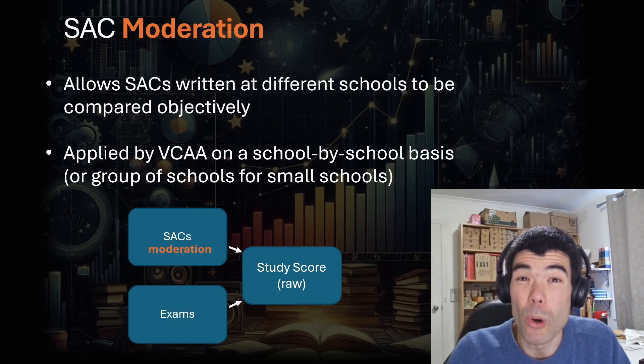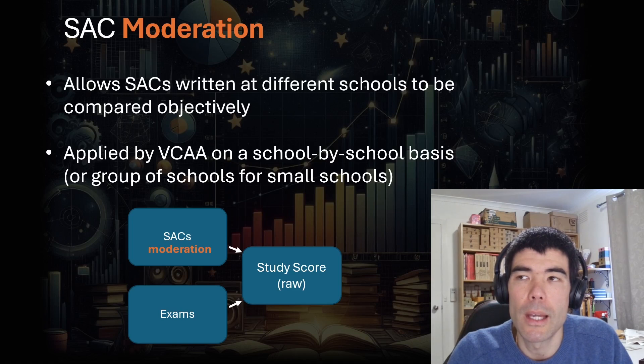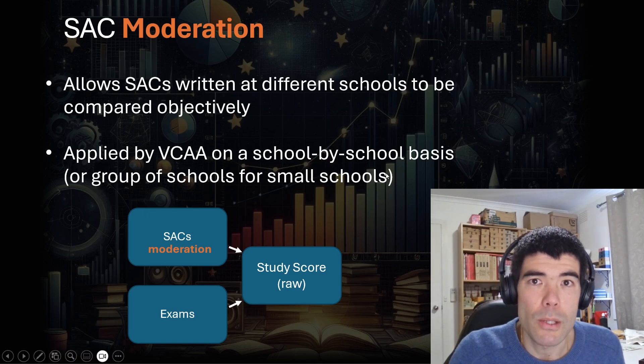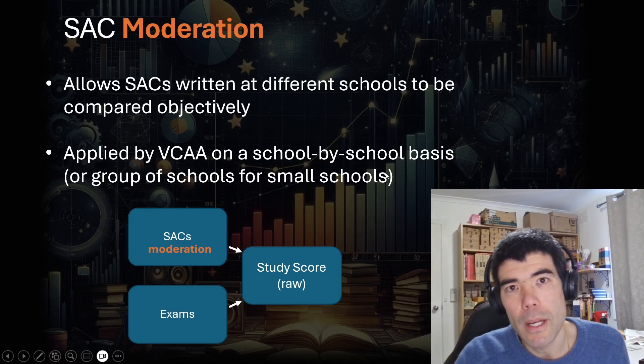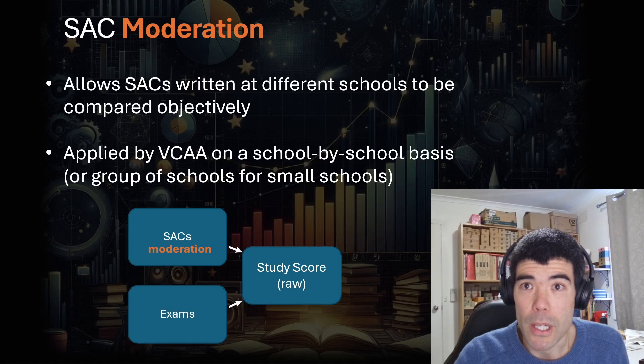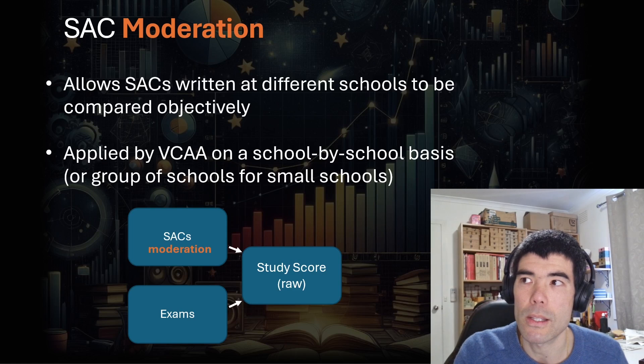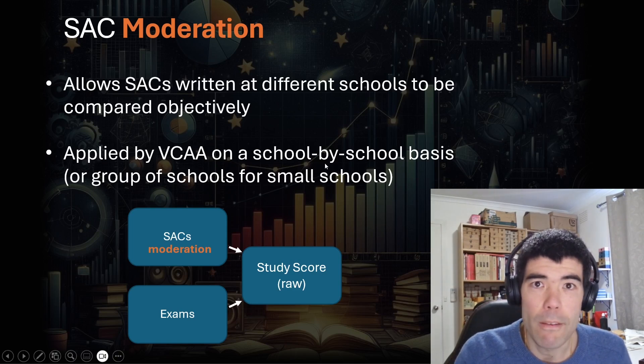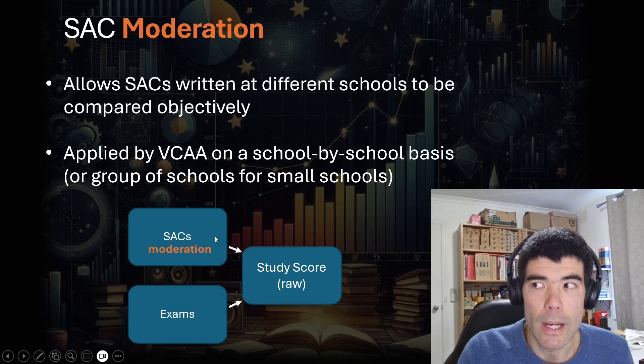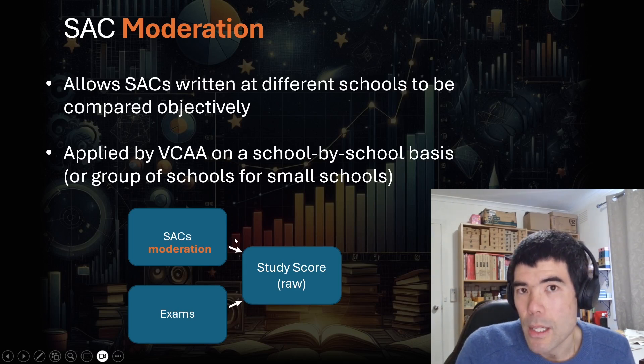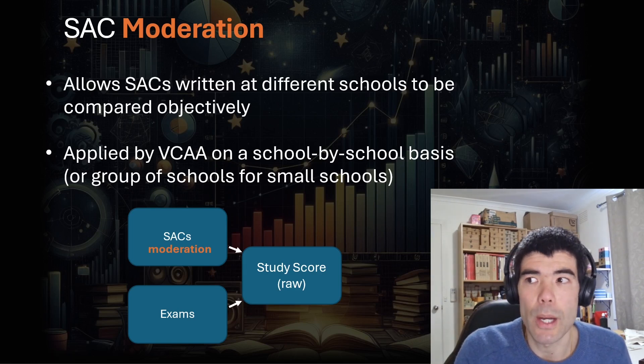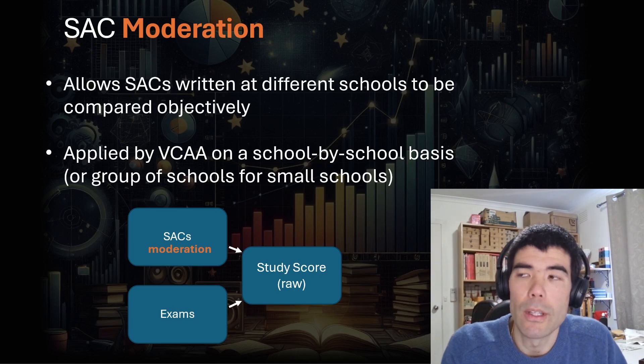SAC moderation is probably more complex than study score scaling because it has to happen on a school by school basis. And compared to like when we look at scaling a subject where you might have thousands of students sitting that subject, we can get a fair idea of how those students have gone in their other subjects. For a school, you might only have 20 students in a school doing maths methods, for example, and we need to moderate their SACs fairly, but there's only 20 of them. So there's less data available to actually do that and do that accurately.